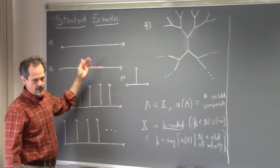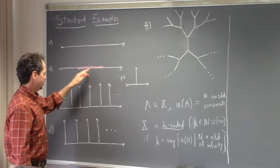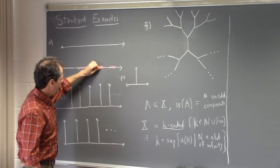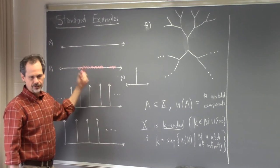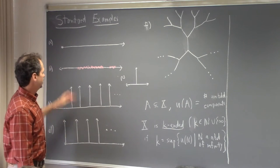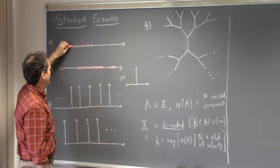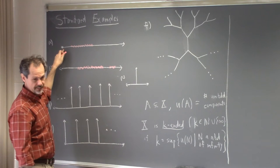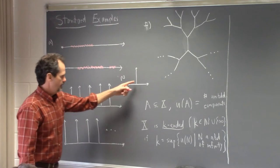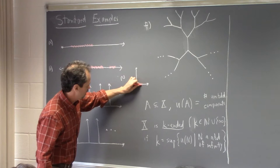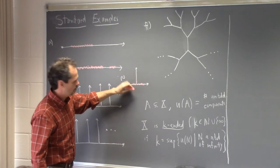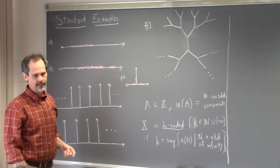In this example, no matter how you draw the neighborhood of infinity — as long as it has at least one point — you always have two unbounded components. You might have a compact set with some bounded components, but we throw those away. With this definition we can make precise that the half-line is one-ended. For the three-ended example, at first you only have two unbounded components, but once the compact set contains the junction point, you get three, and never more.